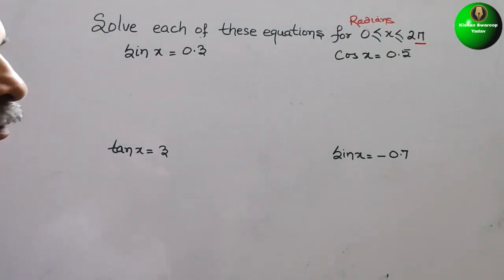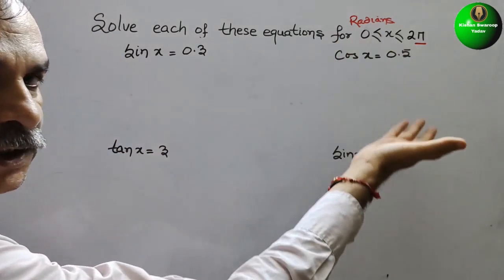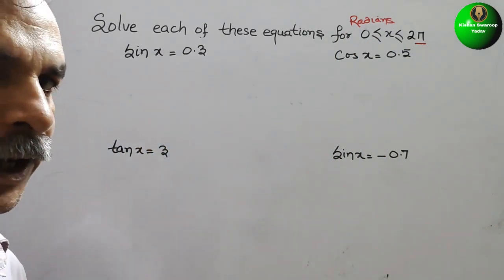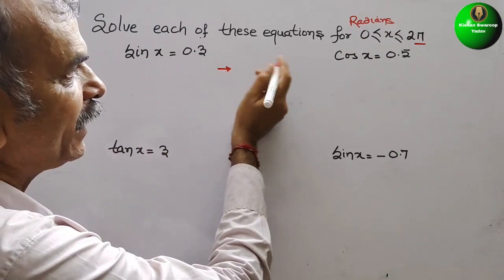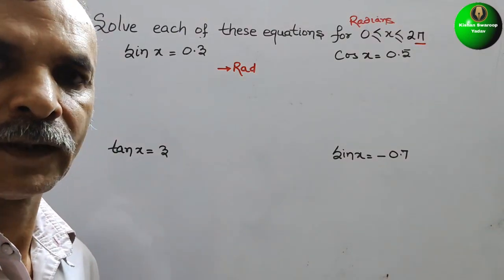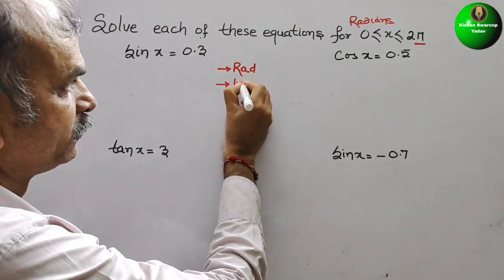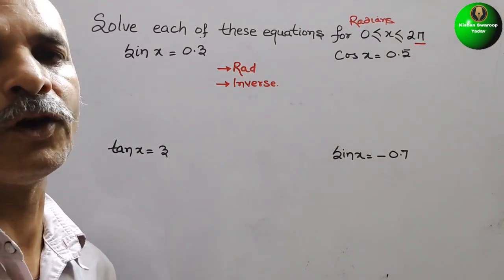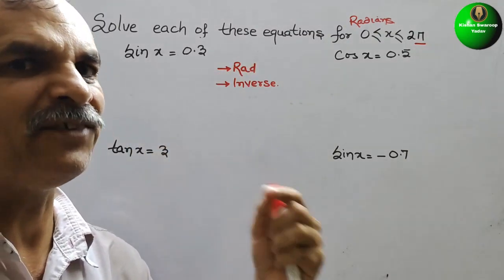First, we have to convert each equation into inverse form — sine inverse, cosine inverse, tan inverse, and again sine inverse. In the calculator, we have to set it to radians (rad) and select inverse. Then only we can proceed. So we will convert every term into inverse form.